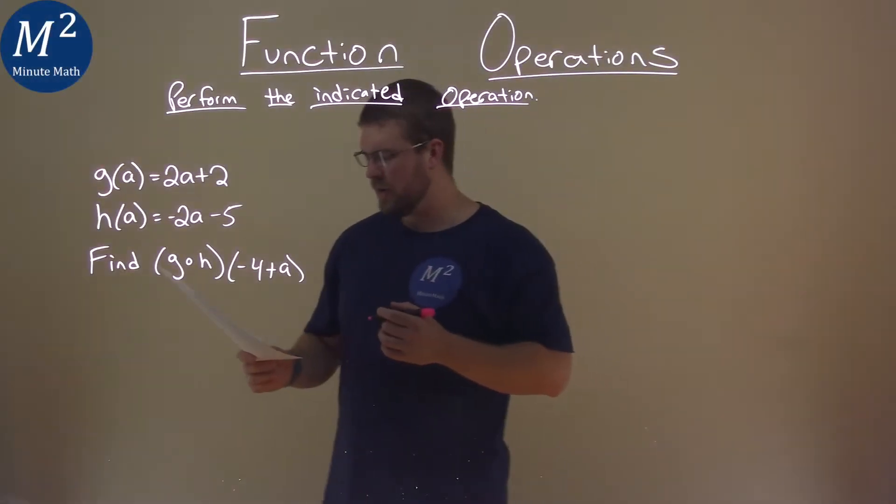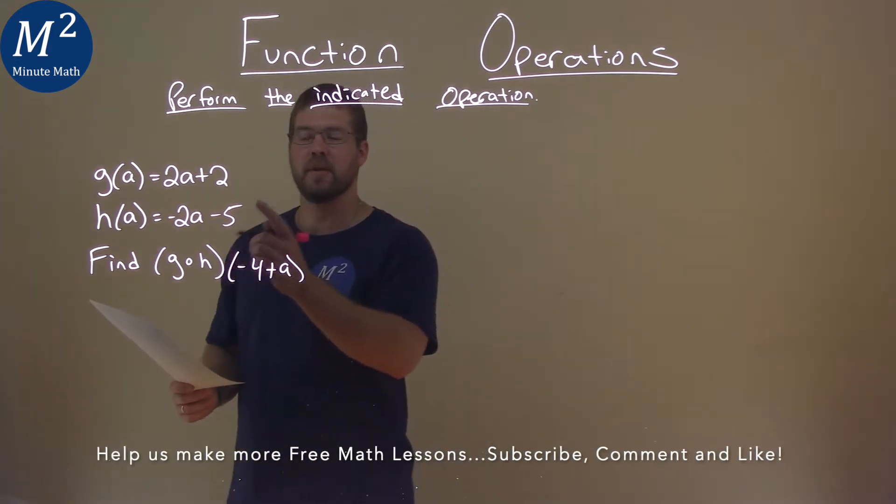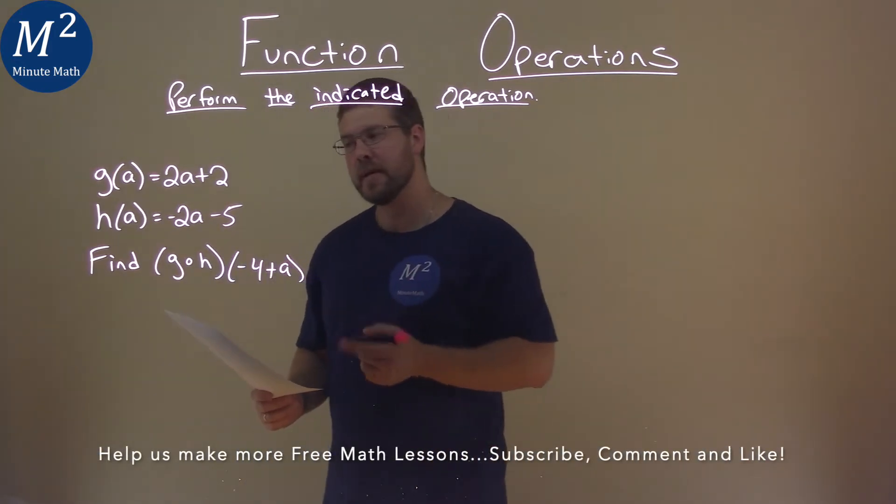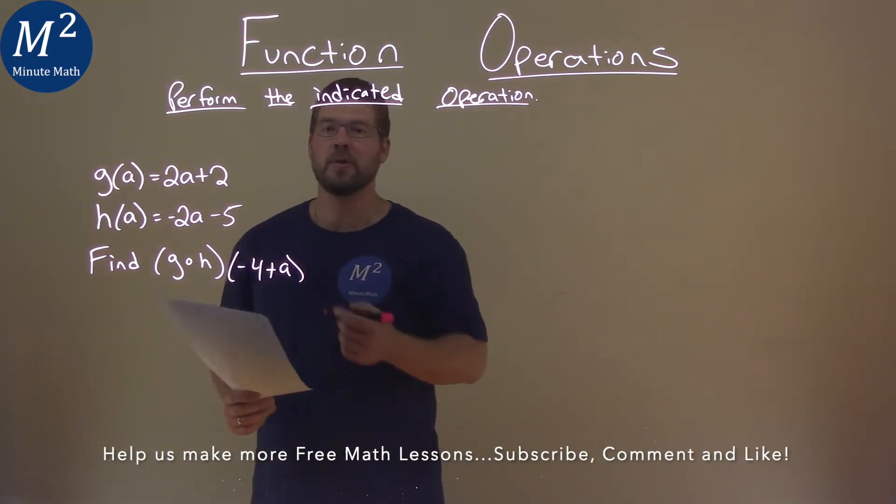We're given this problem right here. g(a) is equal to 2a plus 2, h(a) is equal to negative 2a minus 5, and we need to find g of h of negative 4 plus a.